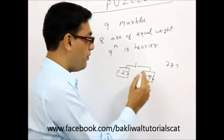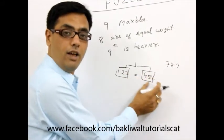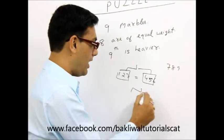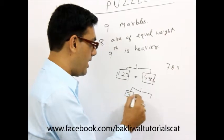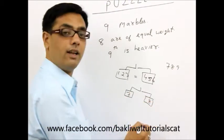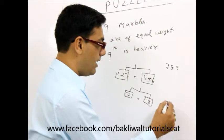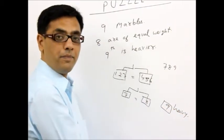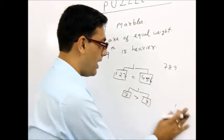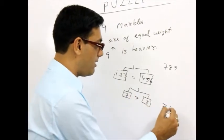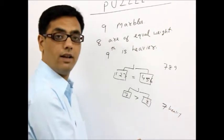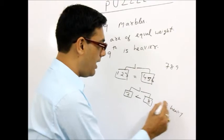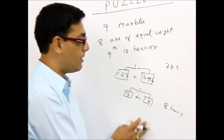So I am comparing them. If they come exactly equal, my answer is 7, 8 and 9. So in my second reading, I will put 7 here and 8 here. If they are equal, the answer is 9 heavy. If it comes out to be greater, then my answer is 7 heavy. If this comes out to be greater, my answer is 8 heavy. This is the first case.